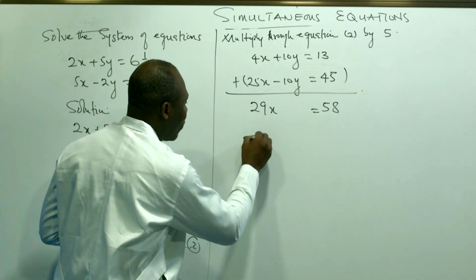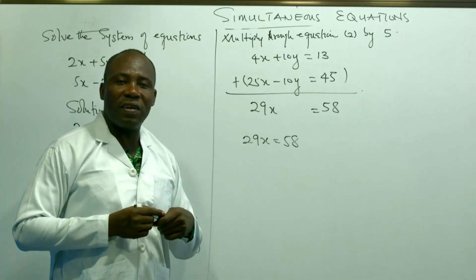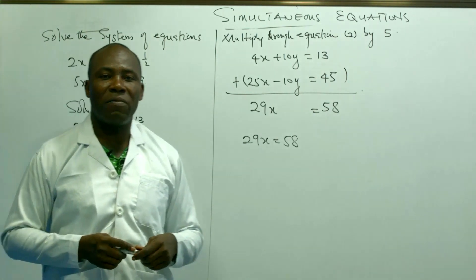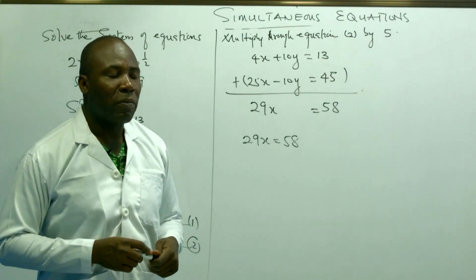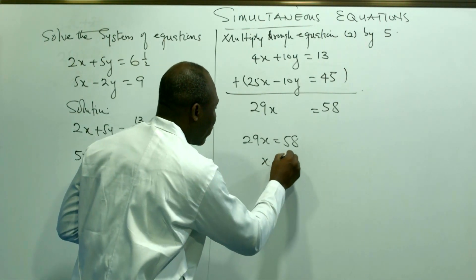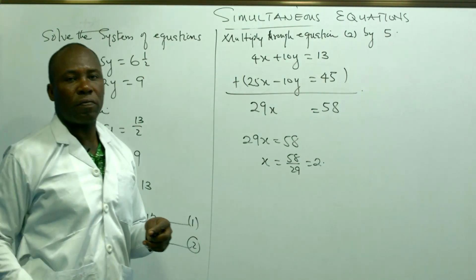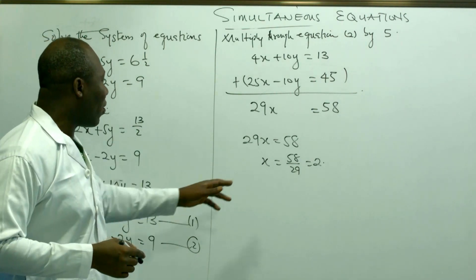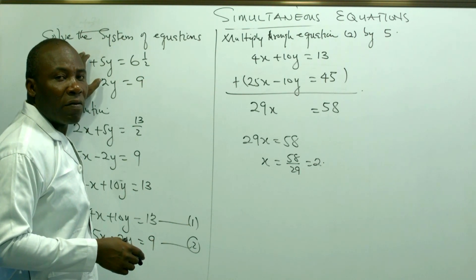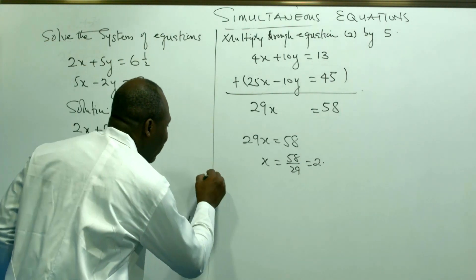So we now have 29x equals 58, which is a linear equation in x — very simple. To find x, multiply both sides by the multiplicative inverse of 29, giving x equals 2. Having gotten x equal to 2, we now substitute x into one of the two equations to find y. Let's substitute into equation 2.